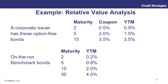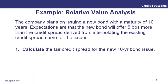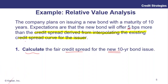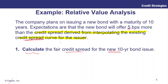Now we're going to look at an example in the curriculum regarding bottom-up relative value analysis, revisiting the interpolation idea. Here's some information about an issuer with bonds of different maturities, alongside government benchmark bonds at different maturities. The trickiest thing about this example is understanding how the data is presented and knowing what to do. You're asked to calculate the fair credit spread for a new 10-year bond issue by the corporate issuer, and you're told the new bond will offer 5 basis points more than the credit spread derived from interpolating the existing credit spread curve for the issuer.